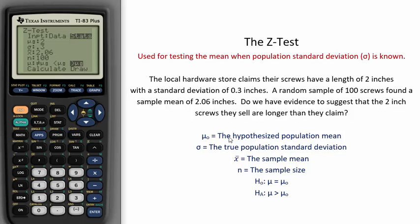A random sample of 100 screws found a sample mean of 2.06 inches. The 100 screws is the sample size, and 2.06 is the sample mean, known as x-bar.